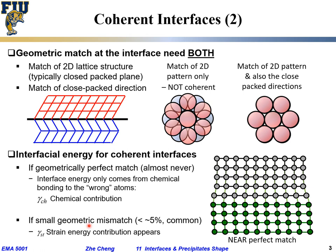Again, in this lecture we are dealing with the interface between two different solid phases. The first type is the coherent interface, which means they match pretty well at the interface, but there is still interfacial energy. It always comes from two terms: one is the chemical term — atoms at the interface are bonded to the wrong types of atoms along certain directions. The other is the geometric or strain energy contribution, because there is almost never a perfect geometric match. That summarizes the coherent interface.